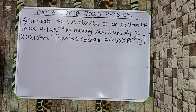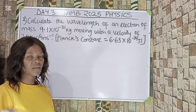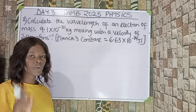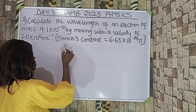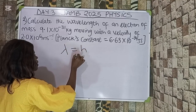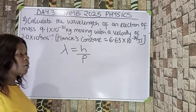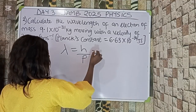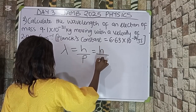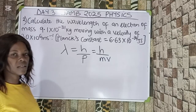Question 2. Calculate the wavelength of an electron of mass 9.1×10⁻³¹ kilograms moving with a velocity of 2×10⁶ meters per second. Planck's constant is given as 6.63×10⁻³⁴ joules per second. We are looking for the wavelength of an electron, and the equation I am going to use is the de Broglie equation. This states that the wavelength of a particle equals Planck's constant over momentum, and since momentum is mass multiplied by velocity, λ = h/(mv).